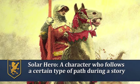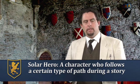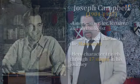This is a character who follows a certain type of path during the course of his story. As Joseph Campbell, the great commentator on literature, suggested, the monomyth of the solar hero follows a certain pattern of events. He has 17 events, and I'm reducing them for ease to roughly five events.